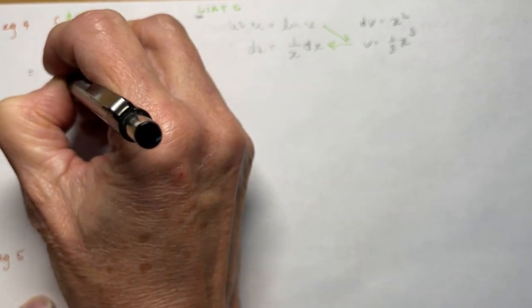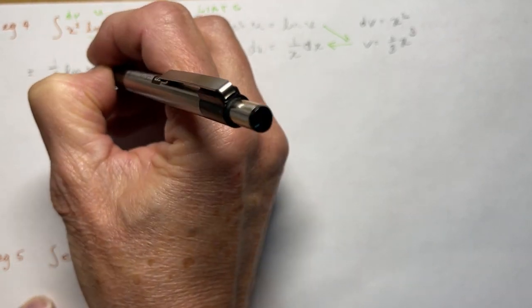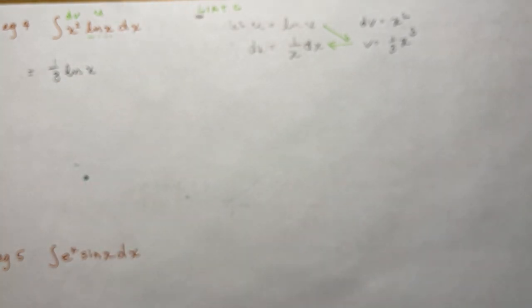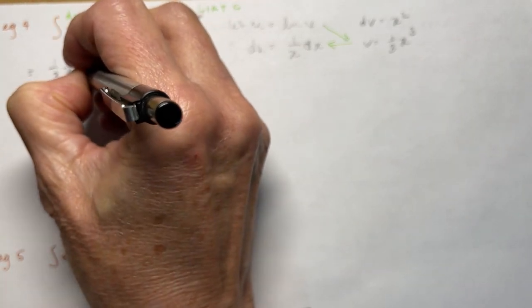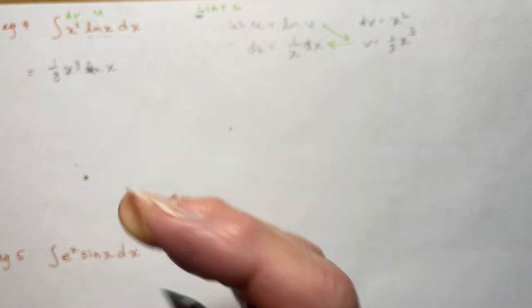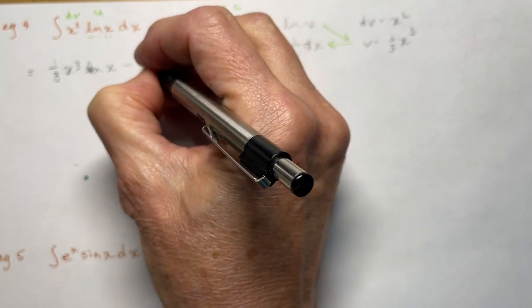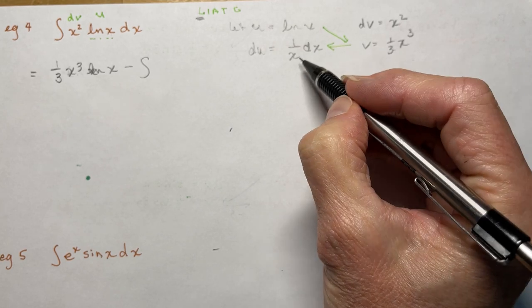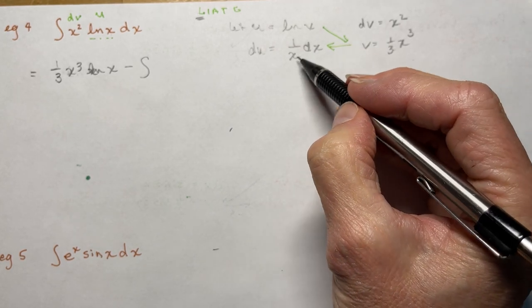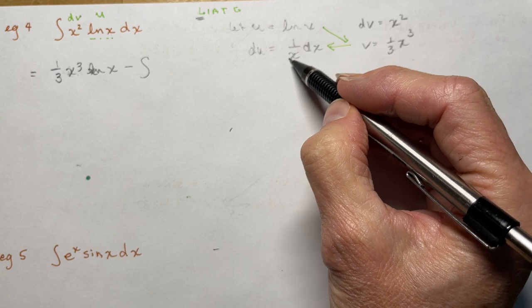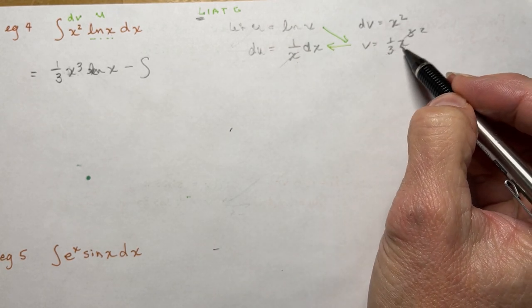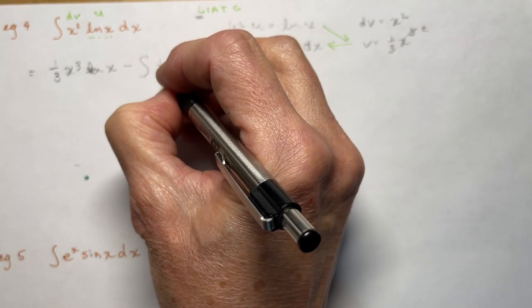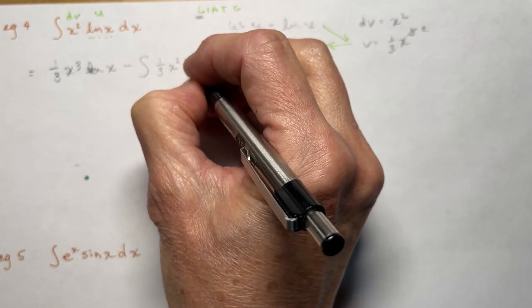So maybe we should write it as (1/3)x³·ln(x) — it just makes things prettier. That's the first part. Minus the integral — and it's this one times this one. One-third times one — the x cancels into x³ twice — so I have the integral of (1/3)x²·dx.